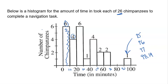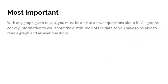So to summarize: dot plots work best for whole number data, stem and leaf plots let you see the actual values, and histograms are for quantitative variables — not bar graphs. What's most important is that with any graph given to you, you need to be able to answer questions about it. All graphs convey information about the distribution of the data, so you have to be able to read a graph and answer questions.